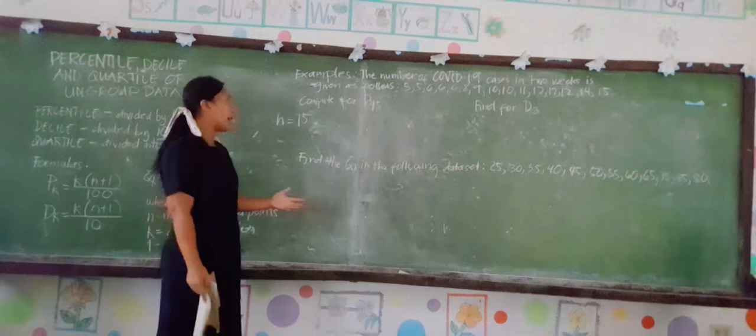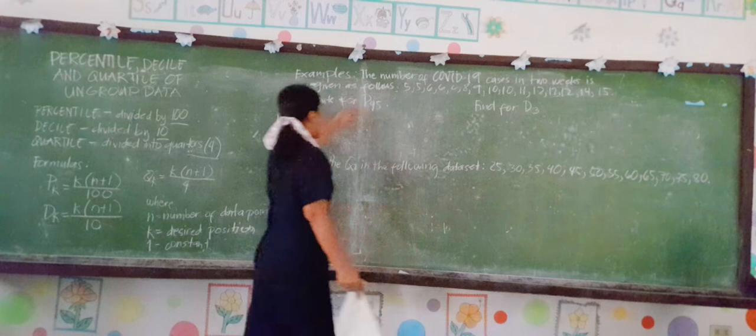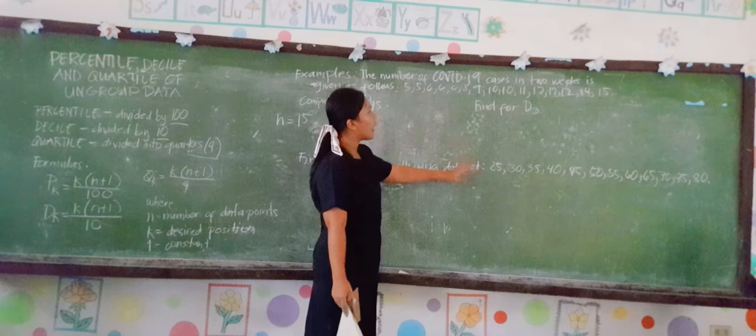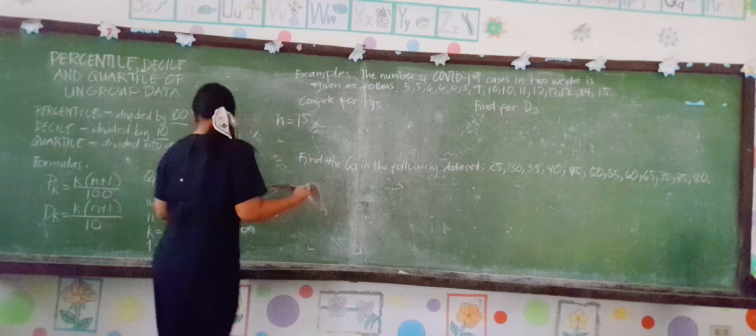Here is the example. The number of COVID-19 cases in 2 weeks is given as follows: 5, 5, 6, 6, 6, 8, 9, 10, 10, 11, 12, 12, 12, 14, 15. There are a total of 15 data points.